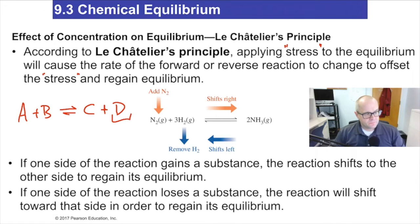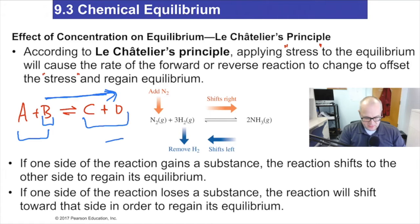What would happen if I took out D? If I removed it from the reaction? The equilibrium goes to the right because there's no D to react with C. What would happen if I added more B? The reaction would shift to the right because B and A are reacting more often now. That's Le Chatelier's principle. Add to this side, reaction shifts this way. Add to this side, reaction shifts that way.